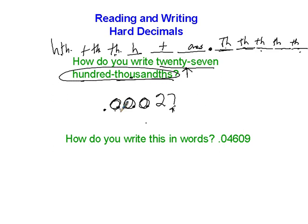Okay, say it with me. Tenths, hundredths, thousandths, ten thousandths, and then we have hundred thousandths. So now I have the number 27 landing in the hundred thousandths place.